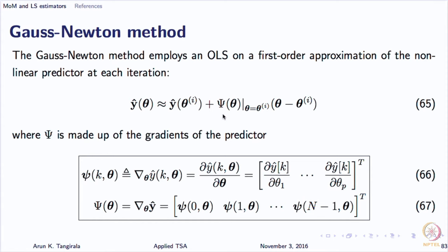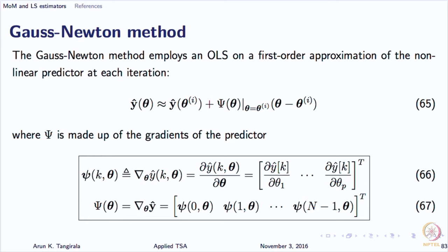That is why you see the equation: theta(i) is the i-th guess, and I construct y-hat(theta) using a Taylor series first-order expansion, so now this is linear. But what appears here is not your phi — do not confuse phi and psi. Phi is the matrix of regressors; the big psi is the matrix of gradients. They are one and the same in linear least squares, but in non-linear least squares they are not.